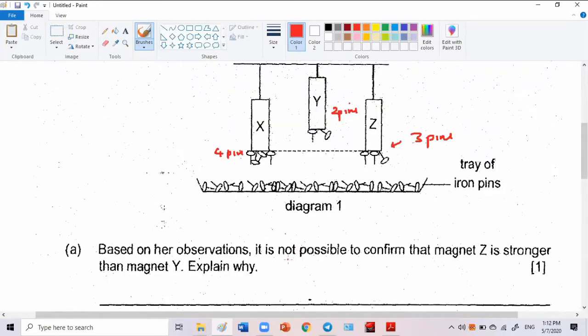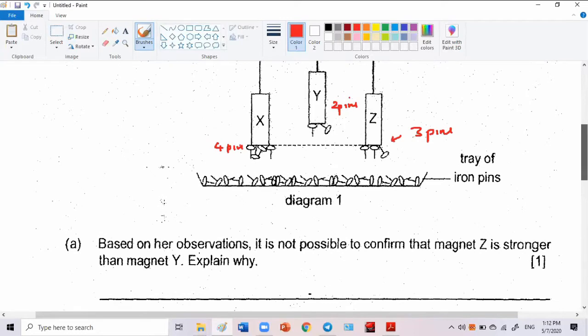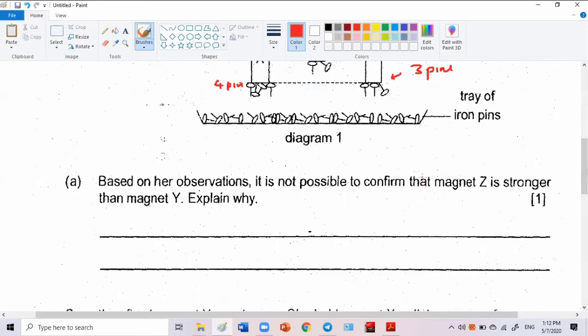Based on our observation, why it is not possible to confirm that magnet Z is stronger than magnet Y? Why? Because Y and Z are different heights. Yeah, because it is not at the same height.